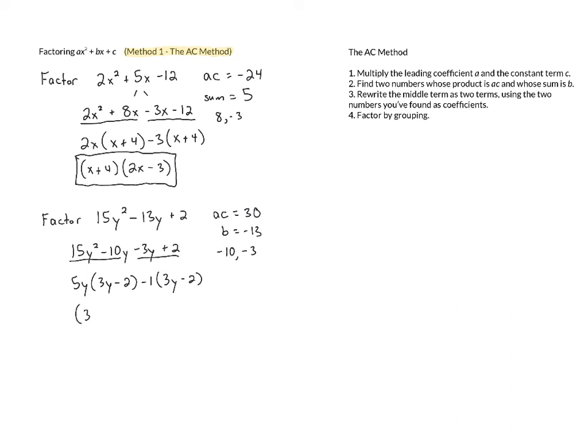Then we pull the GCF from the groups out front, 3y minus 2. We put the leftovers in another set of parentheses, 5y minus 1. And this is our final answer.